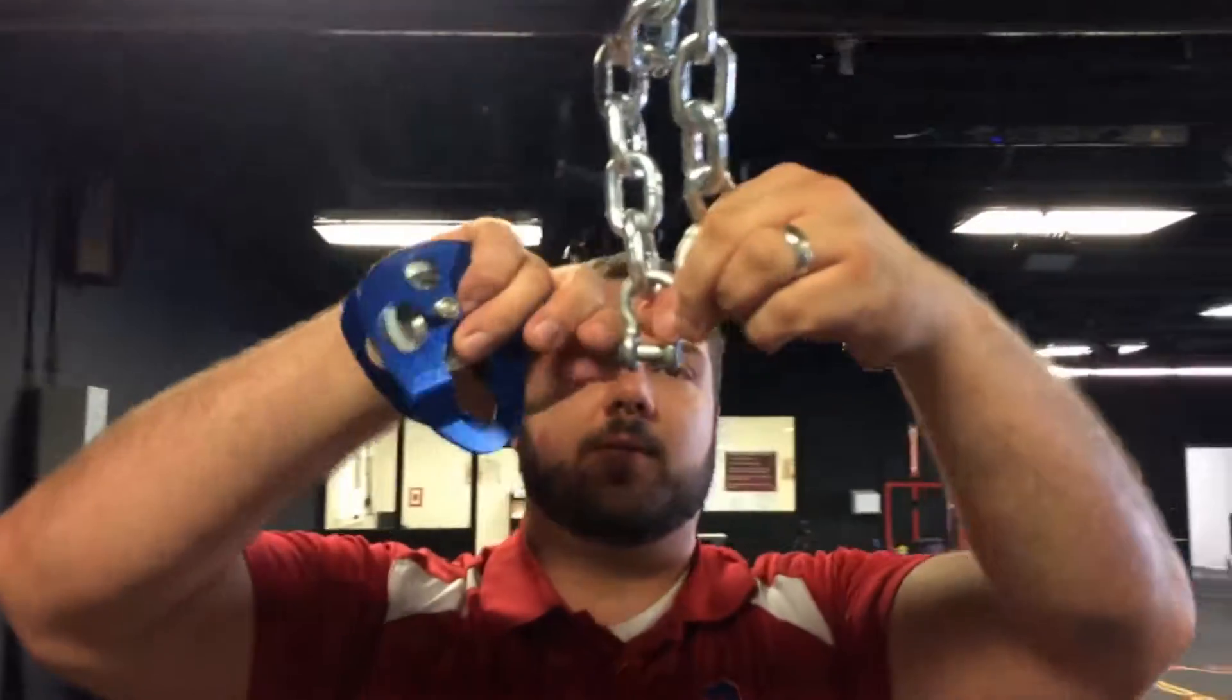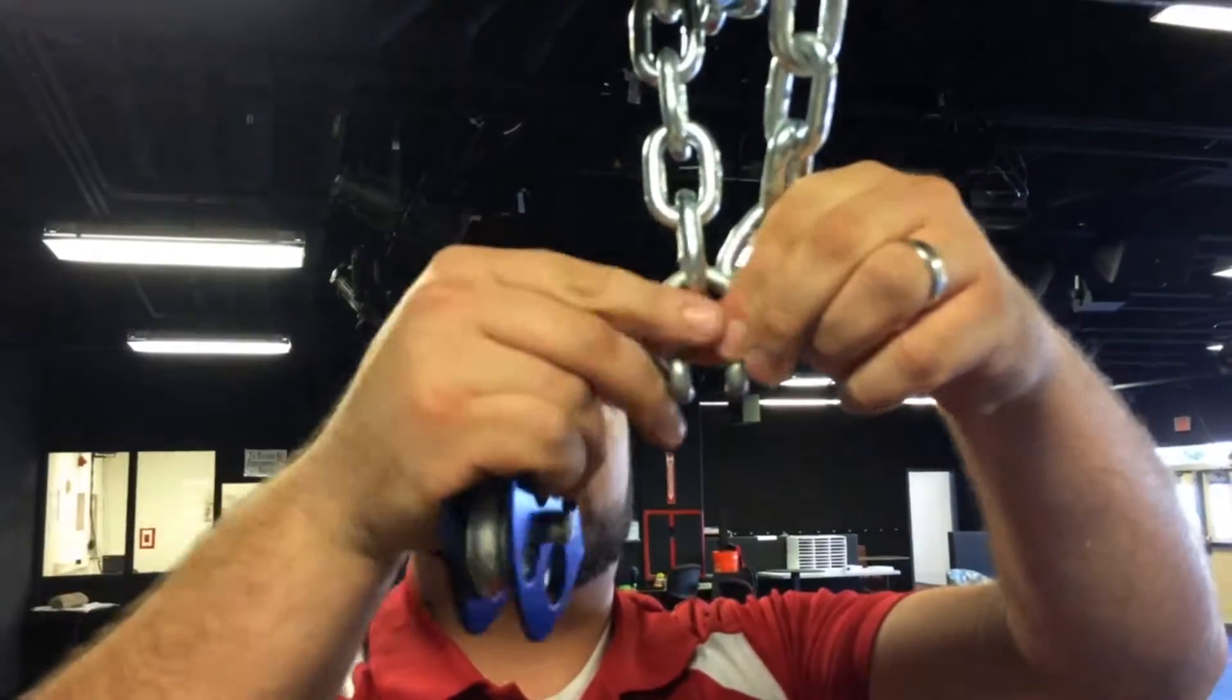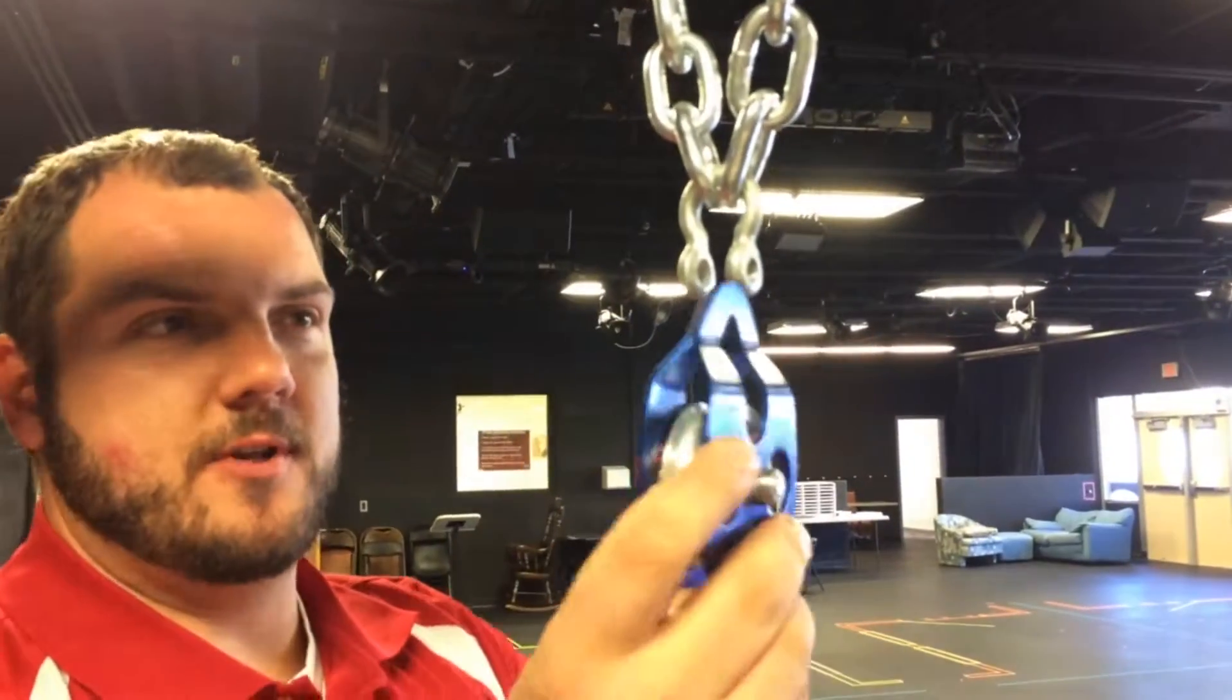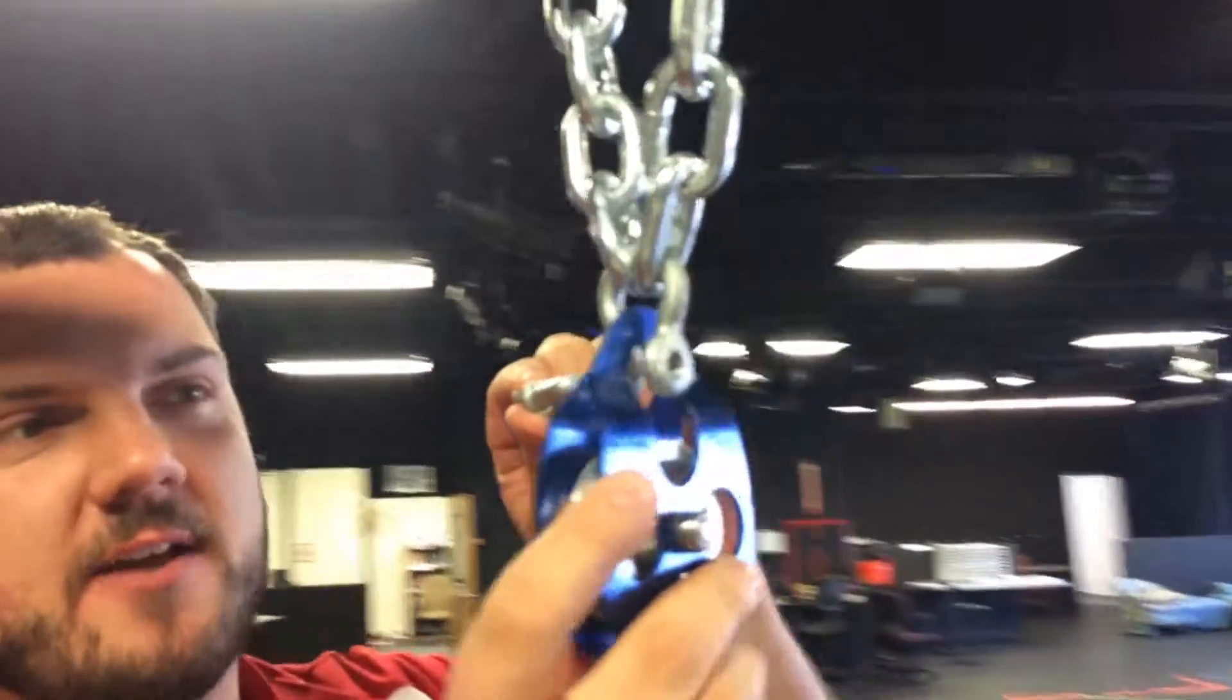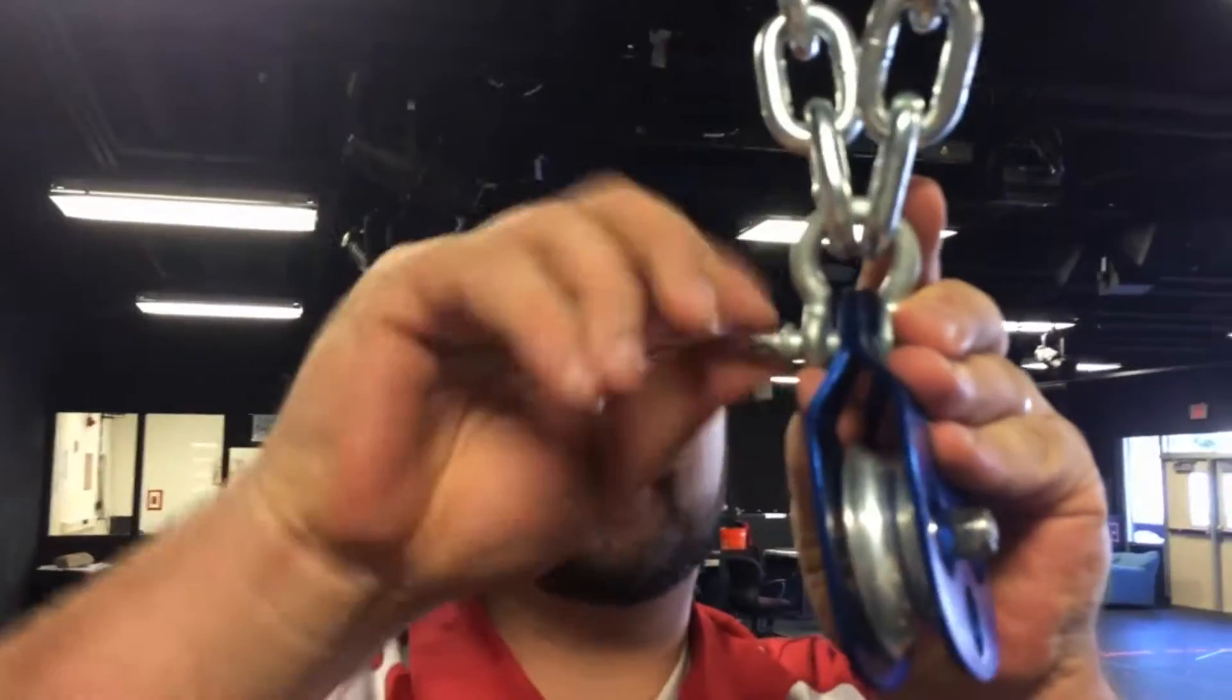Coming down here, we loosen our shackle, thread it through the opposite part of the chain, take the pulley, place it in between the shackle, and thread the shackle to close the pulley in place.